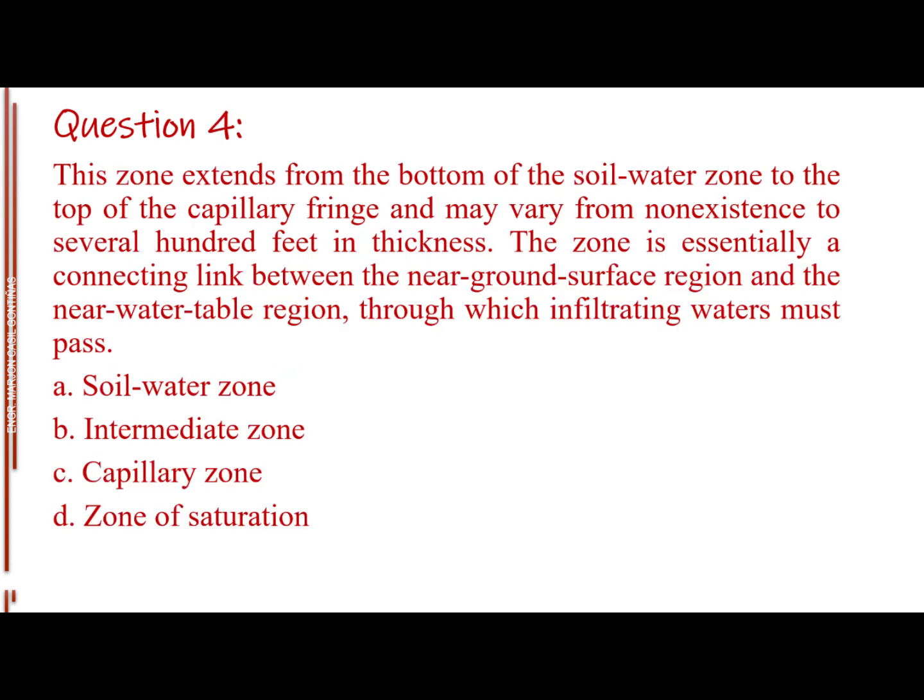Question number 4. This zone extends from the bottom of the soil water zone to the top of the capillary fringe and may vary from non-existence to several hundred feet in thickness. The zone is essentially a connecting link between the near ground surface region and the near water table region, through which infiltrating waters must pass. Letter A, Soil water zone. Letter B, Intermediate zone. Letter C, Capillary zone. Letter D, Zone of saturation. The answer is Letter B, Intermediate zone.